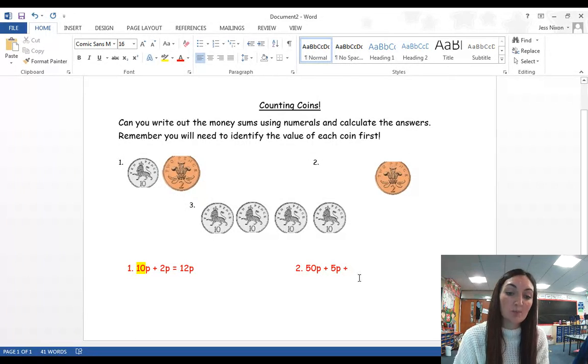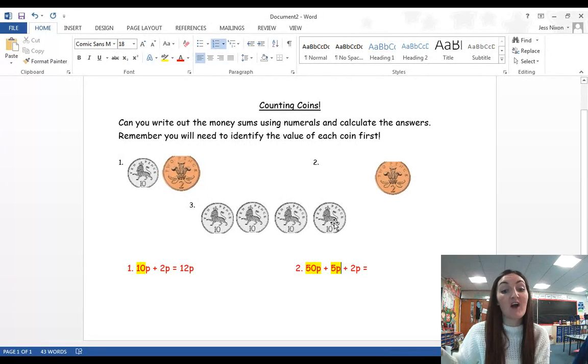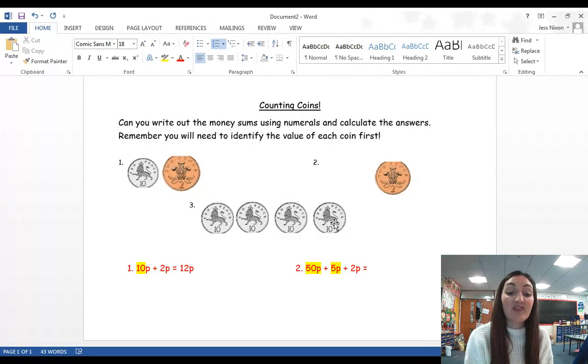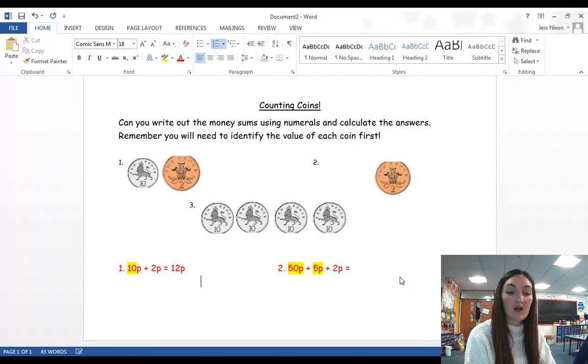I'm going to delete that so I don't get confused. And my last coin here is 2 pence equals. Now, you could either add your 2 numbers together, so I could add my 50 pence and my 5 pence. And I know that 50 and 5 more is 55, or I could put the 50 in my head and count it on. Then, I could write underneath here if I wanted to, I could write that term, write 50 pence and 5 pence equals 55 pence.